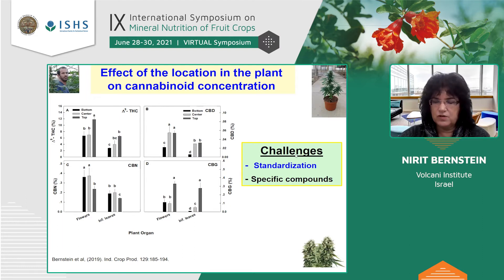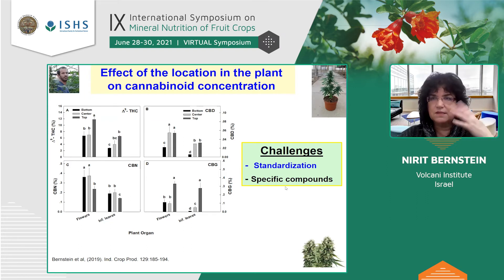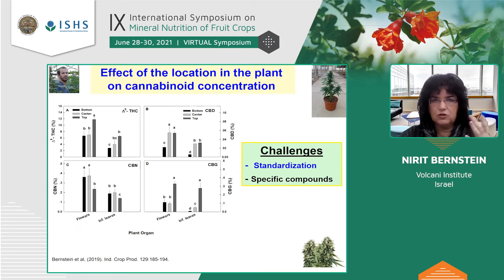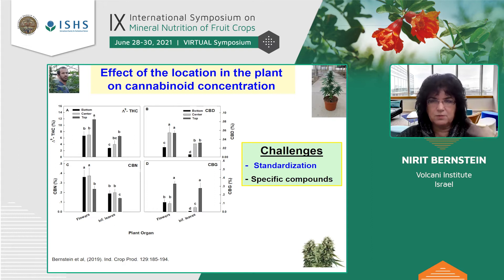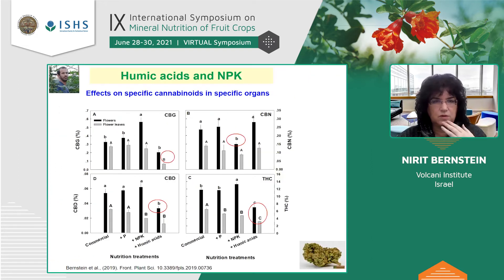So standardization of the secondary metabolite profile is critical, and understanding the effect on specific compounds is critical. Therefore, studying how to cultivate a plant — nutrition or otherwise — is critical in order to produce a plant material suitable for the growing and exploding cannabis industry.